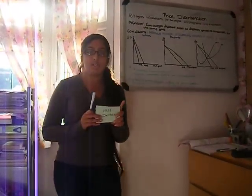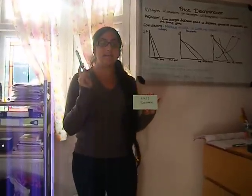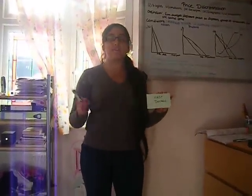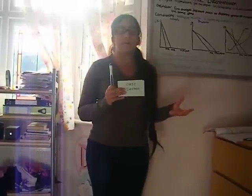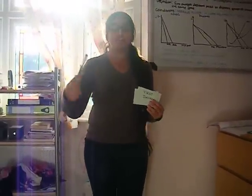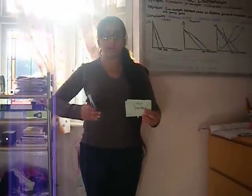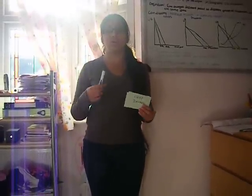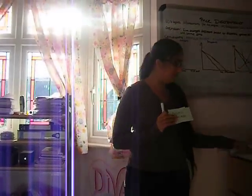First degree price discrimination occurs when firms charge the maximum price that each consumer is willing to pay, so they capture all of the consumer surplus. A good example of this might be in a market stall. If someone's selling a pen, each time a consumer comes to buy the pen, the market stall will charge the maximum each consumer is willing to pay, capturing the consumer's surplus.